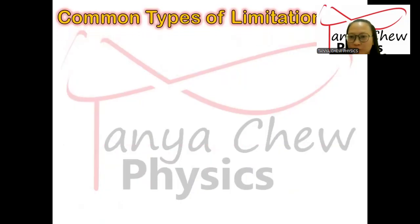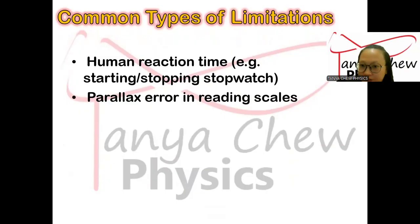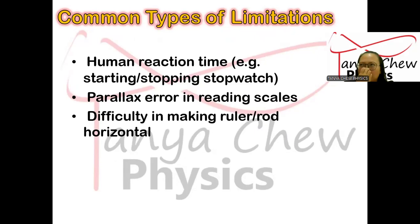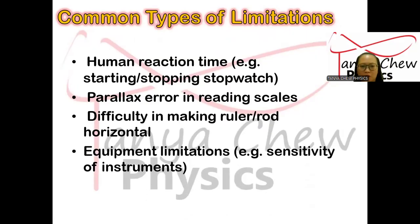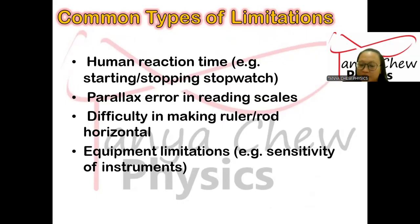Now, the common types of limitation. Maybe human reaction time — for example, you start the stopwatch a little bit faster or stop it a little bit earlier. Or you have parallax error in reading some scales. Or maybe you have difficulties making a ruler or rod horizontal during the experiment. Or this could be caused by equipment or apparatus limitations — maybe the sensitivity of the instruments. For example, if you were given a meter rule to measure the thickness of a paper or wire, that is an equipment limitation, because they didn't prepare you with the correct instruments to do your measurements. That is one of the limitations which you cannot stop during the experiment.